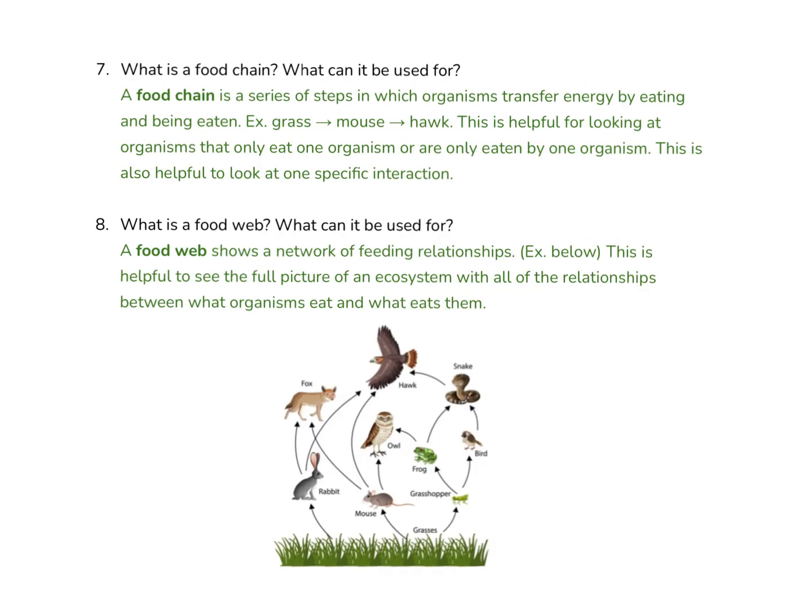Question number 7: what is a food chain and what can it be used for? A food chain is a series of steps in which organisms transfer energy by eating and being eaten. For example, energy goes from grass to mouse to hawk. It's helpful for looking at organisms that only eat one organism or are only eaten by one organism — a very efficient one-way chain, like a necklace chain. It's also helpful for looking at a specific interaction to see how one organism directly affects the other.